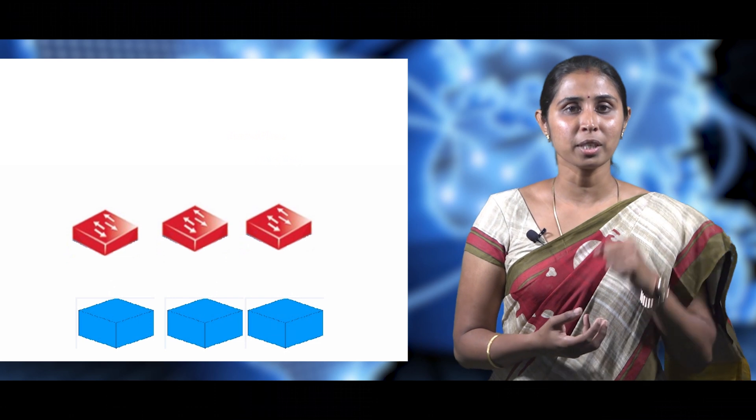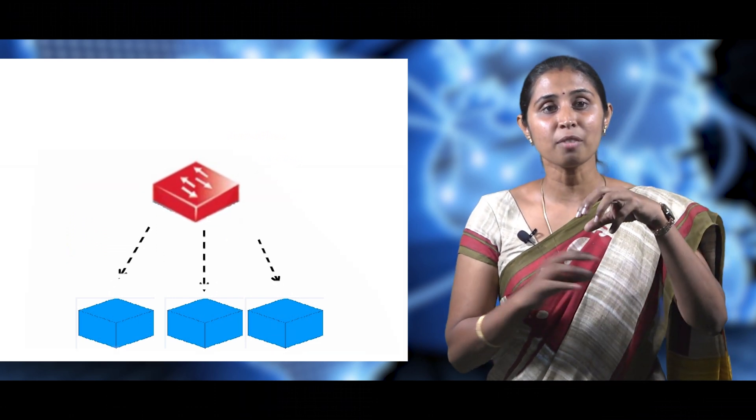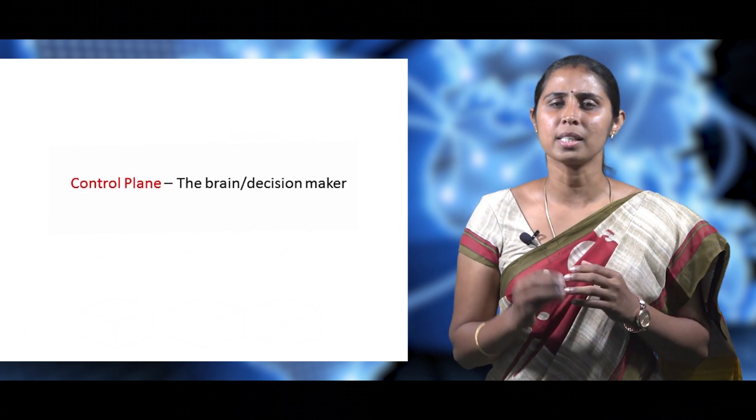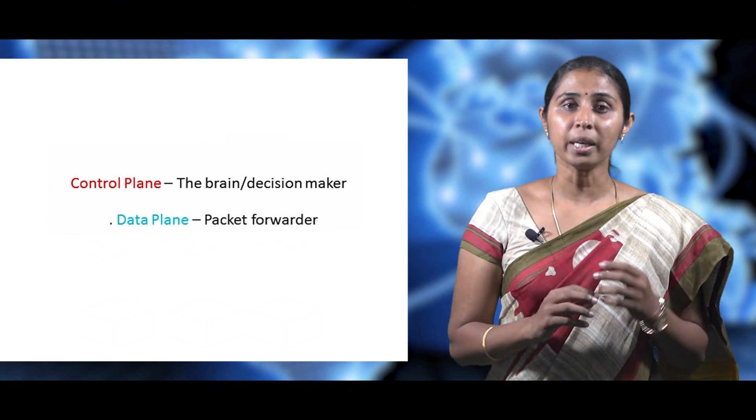Now we are going to see what software defined networking is. It is a new approach to design, build, and manage networks. SDN is physically separating the control plane from the data plane. A single control plane controls several forwarding planes. The control plane acts as the brain or decision maker while transferring packets — it is generally a software-based controller. The data plane acts as a forwarder in dedicated hardware. SDN allows network administrators to quickly and easily manage network services from a centralized location without manually configuring routers or switches. The main benefit of centralizing the control plane is allowing forwarding decisions to be made globally across the SDN domain rather than at each hop.